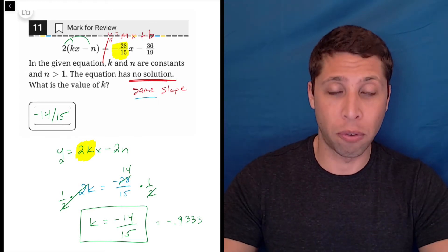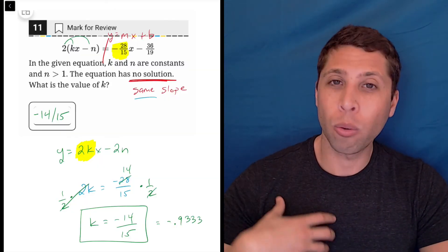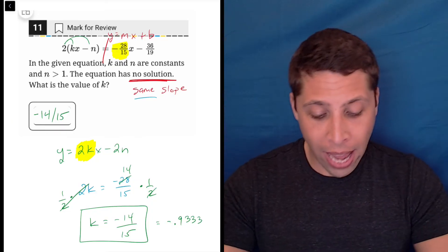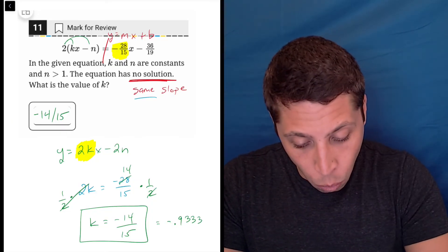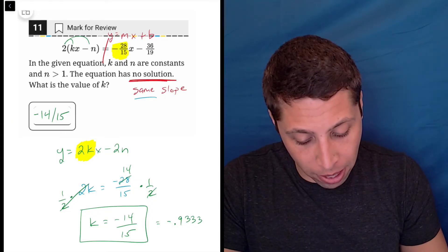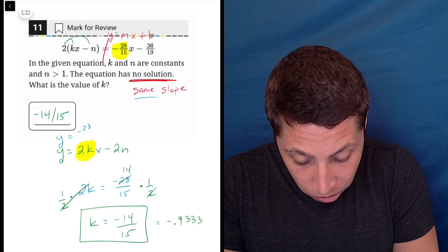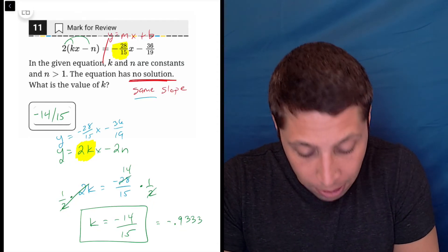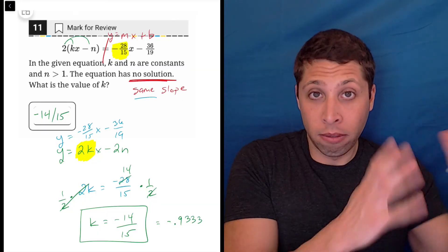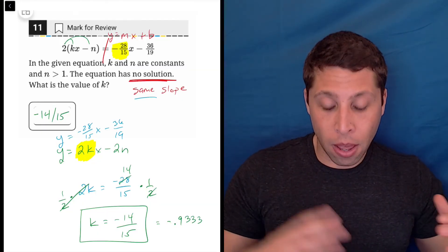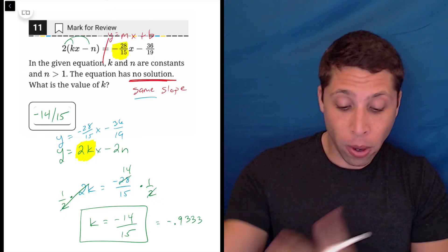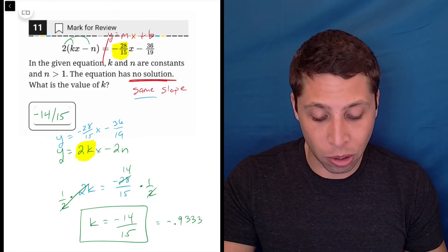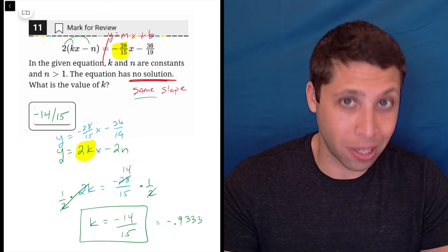Well, you could solve this with just kind of thinking about it as one equation, but conceptually, that is much, much harder for me. The way I learned this, the way I think about it, is always as a system of equations. And if I had the two equations as y equals 2kx minus 2n and y equals negative 28 over 15x minus 36 over 19, and I graphed them on Desmos, I would have two lines. Now, if I wanted to solve these algebraically, because they're both set equal to y, I can set them equal to each other, and that's kind of what we were given in the first place.